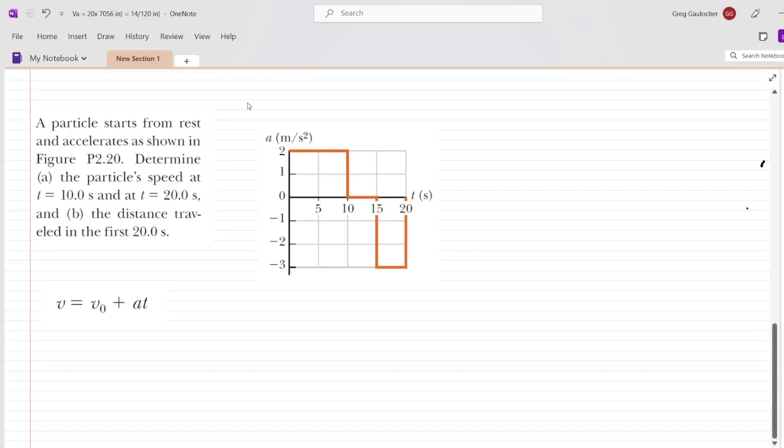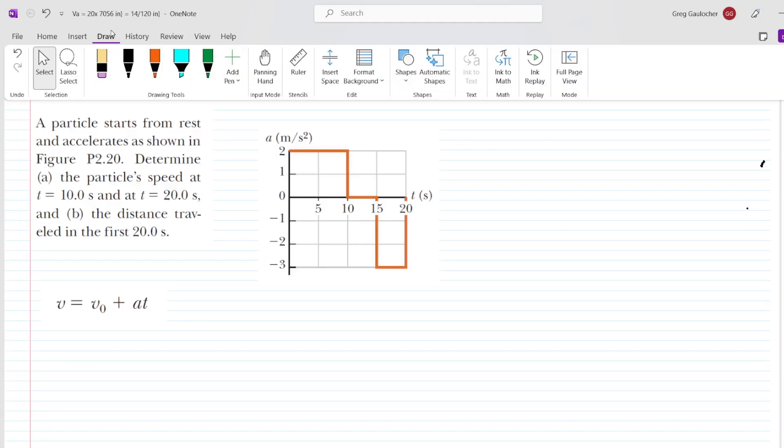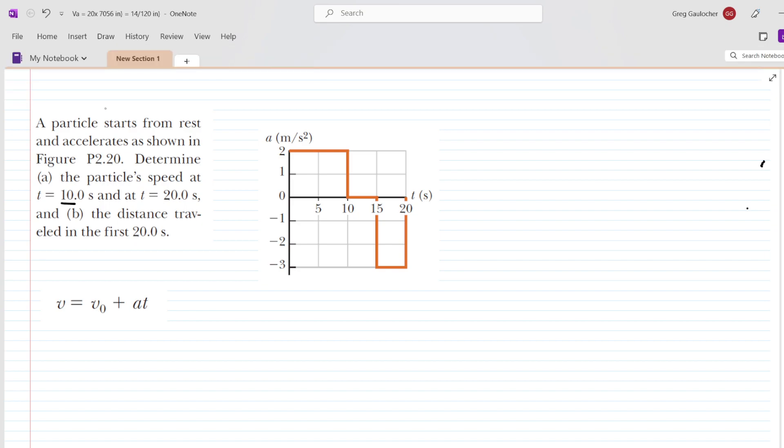In this question, our first task is to determine the particle's speed at a time of 10 seconds. So if we look at the graph, we can see along this segment here that from t equals 0 seconds to t equals 10 seconds, we have an acceleration that is equal to 2 meters per second squared.